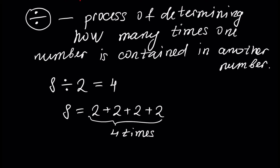In this case, 8 is called the dividend, 2 is called the divisor, and 4 is called the quotient.